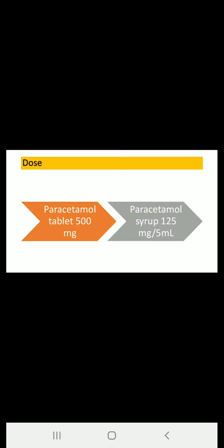Now we will see its dose. For the paracetamol tablet, the normally physician-prescribed dose is 500 milligrams. In syrup form, the dose is somewhat less — normal dosage is paracetamol syrup 125 milligrams per 5 ml.